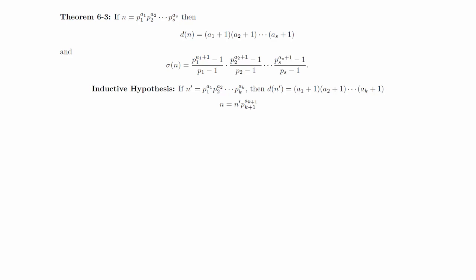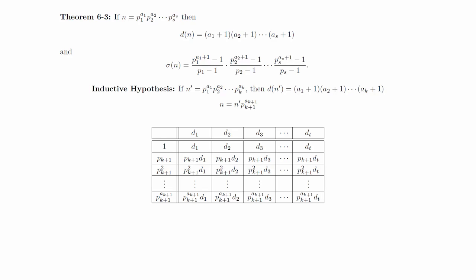And we want to figure out what the prime divisors of this number n are. Suppose that d1, d2, up to dt are the divisors of n prime, and consider this chart of values. The divisors of n prime are written across the top of the chart, and the divisors of p sub k plus 1 to the a sub k plus 1 are written down the left column.